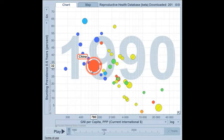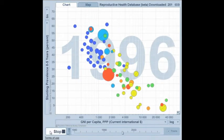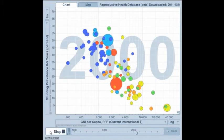As we play this forward, we see the stunting starting to come down and per capita GNI going up as countries move over there to the right.